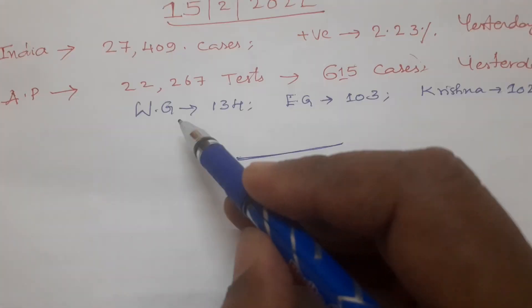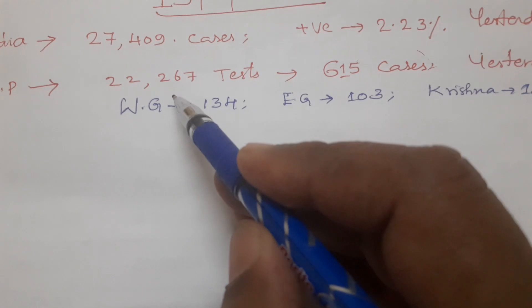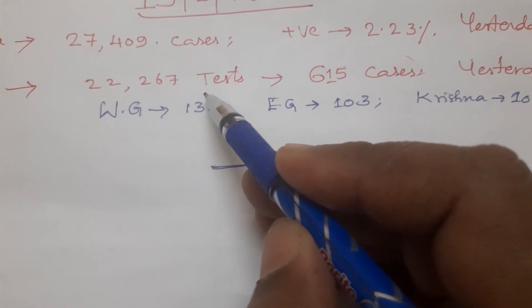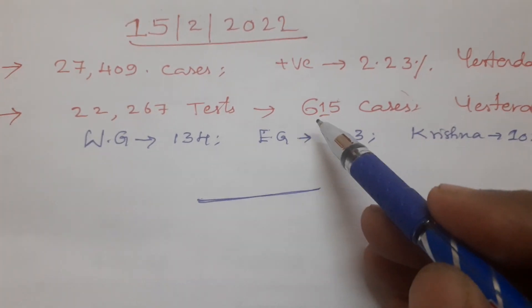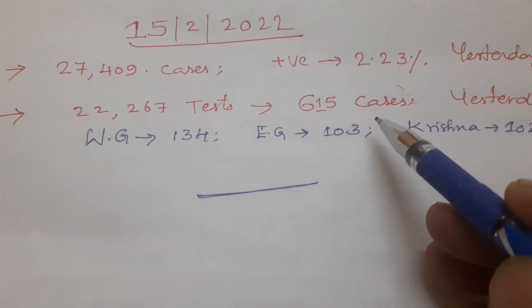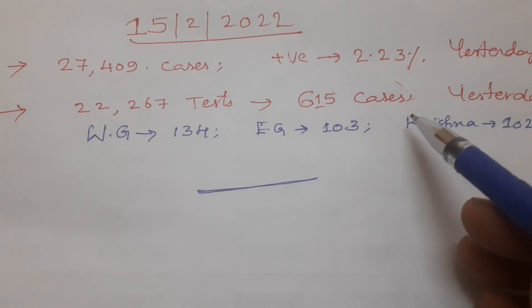When it comes to Andhra Pradesh, today 22,267 tests were conducted. Out of these, 615 cases were reported.